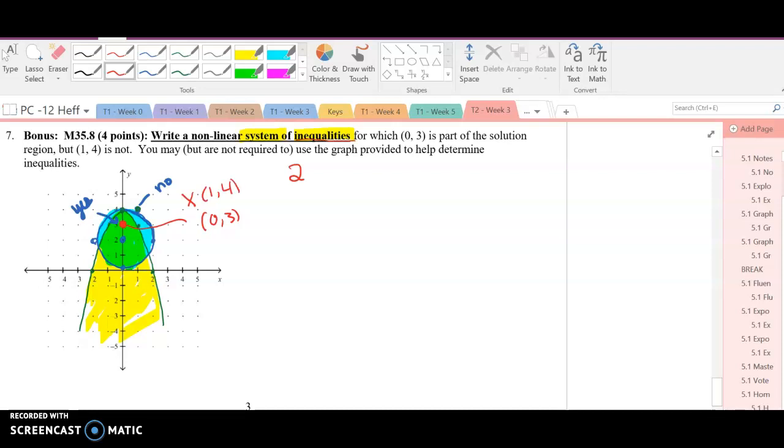The circle we know is x squared, because there's no shift left or right, plus (y - 2) quantity squared puts us up to 2, less than or equal to 4, 2 squared. That is the blue.